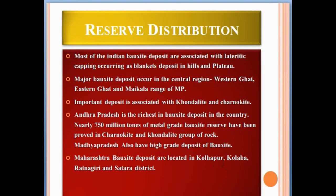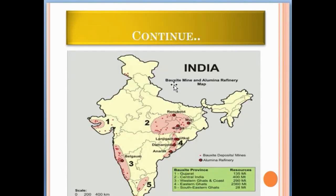Madhya Pradesh also has high-grade deposits of bauxite. Apart from these, Maharashtra bauxite deposits are located in Kolhapur, Kolaba, Ratnagiri, and Satara districts. On this map showing the bauxite provinces of India, you can see Gujarat, specifically Kutch, where bauxite deposits occur, central India including Madhya Pradesh, Chhattisgarh, and some Jharkhand area, the Western Ghats and coastal area including Kerala and Andhra Pradesh, and the Eastern Ghats and South Eastern Ghats.